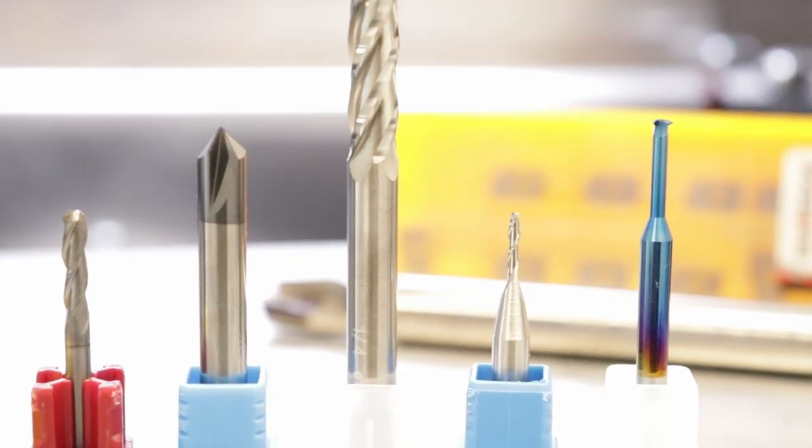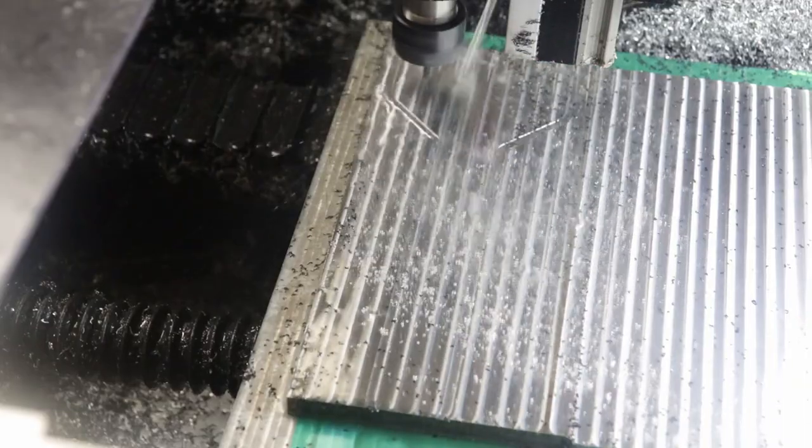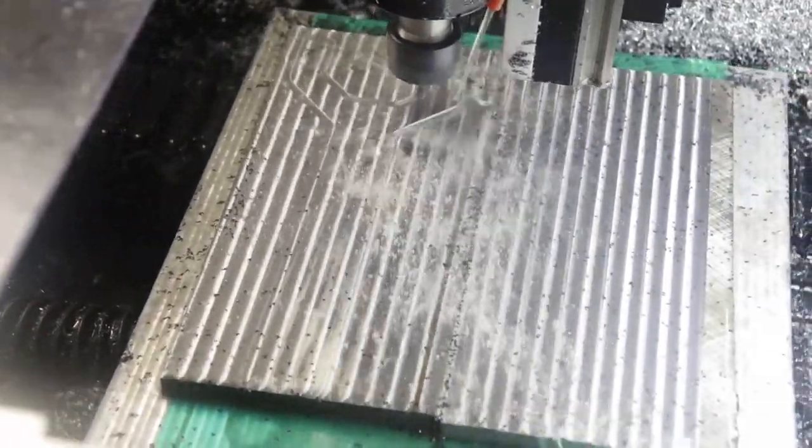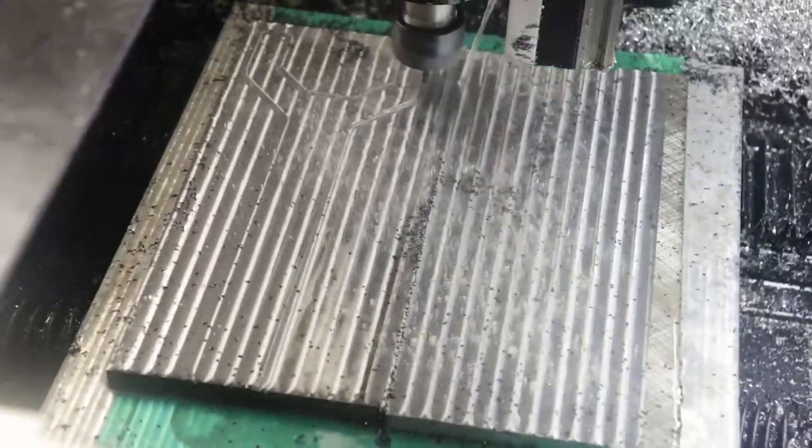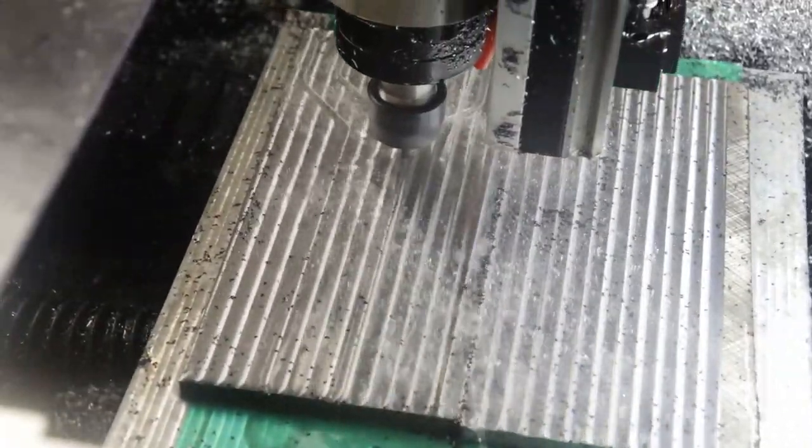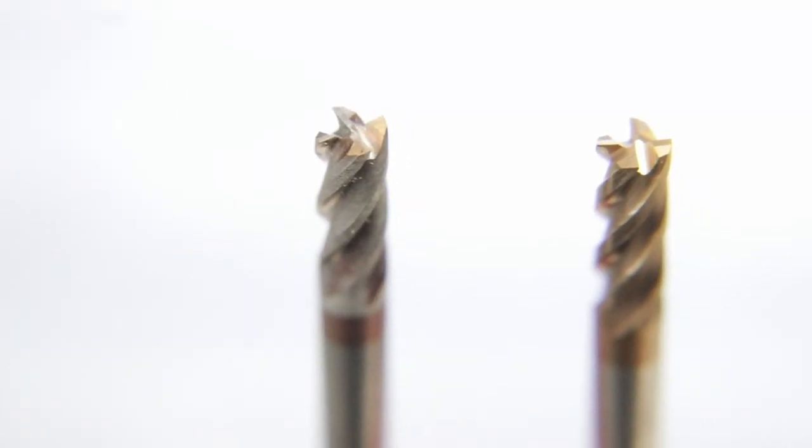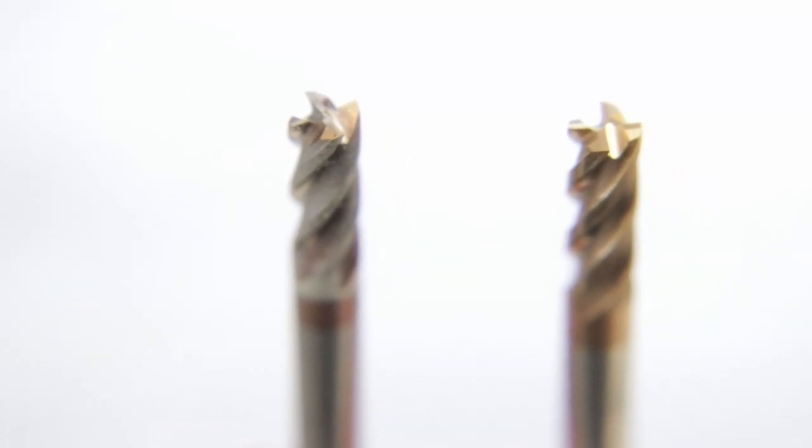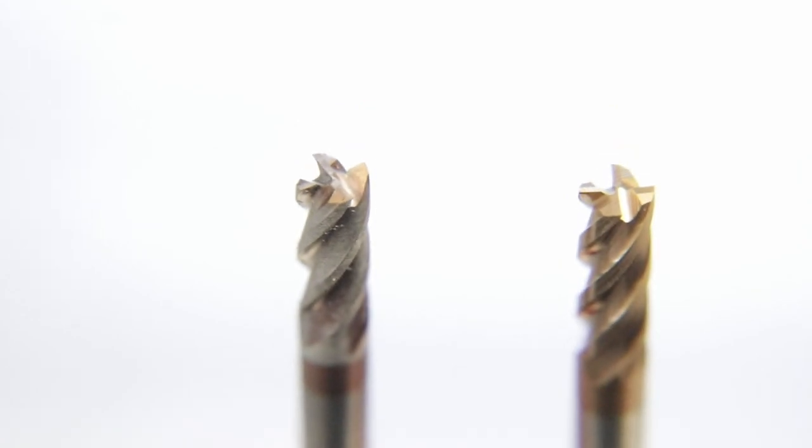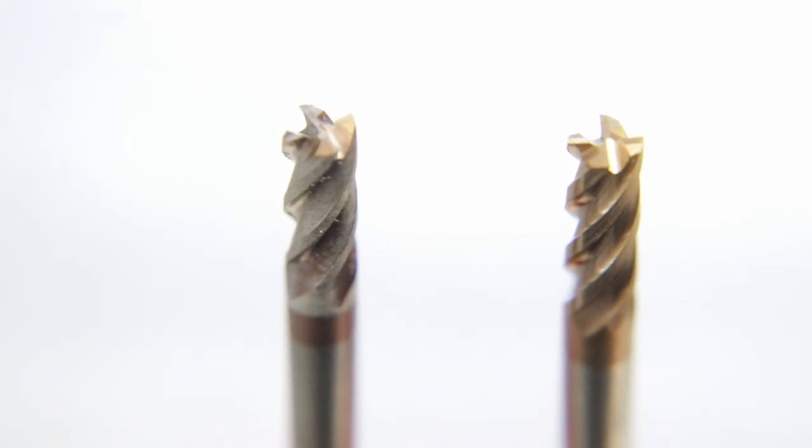Endmills come in all shapes and sizes, each made to excel at specific applications. One thing they all share in common is that they need to have sharp, hard cutting surfaces, at least significantly harder than the material they're cutting into. To increase tool performance and tool life, many endmills have coatings that adjust the surface properties to increase the cutting efficiency, at least until the coating wears off.